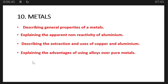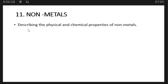Also explaining the advantages of using alloys over pure metals, identifying common uses of alloys. Topic 11 is nanometers. Describing the physical and chemical properties of nanometers, describing industrial manufacture of nitrogen, and explaining the importance of nitrogenous fertilizers.